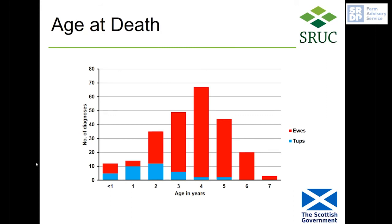Looking at the breakdown of post-mortem results, there is a peak at four years of age. The blue columns are diagnoses in tups and the red in ewes. You can get OPA in surprisingly young animals — even down to five or six months of age in some cases — but these are very much in the minority.